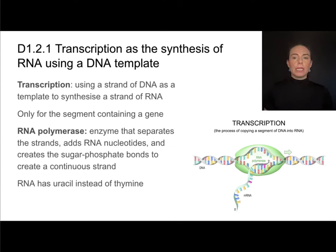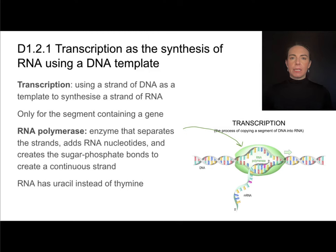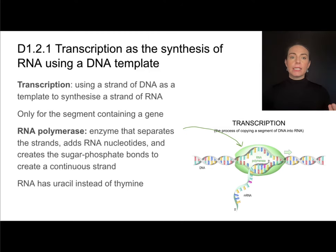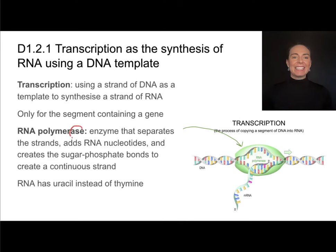RNA polymerase is shown here in green — it's this big green blob-looking thing. It does a couple of things: first, it's going to separate the strands. In DNA replication, that was done by helicase; in this case, it's done by RNA polymerase. The name RNA polymerase tells you what the function is — it is an enzyme that synthesizes a polymer of RNA.